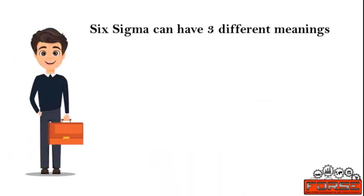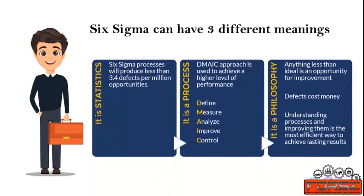Six Sigma can have three different meanings. As a statistical tool, it focuses on producing 3.4 defects per million opportunities. As a process, it focuses on DMAIC and DMADV approaches to achieve improvement to existing and new processes. As a philosophy, it is based on the theory that reduction in defects is a better approach to lower costs and increase customer loyalty. It realizes the fact that defects are expensive, and developing a high-quality product at the right cost is essential for customer satisfaction and profitability. Variations limit process performance.